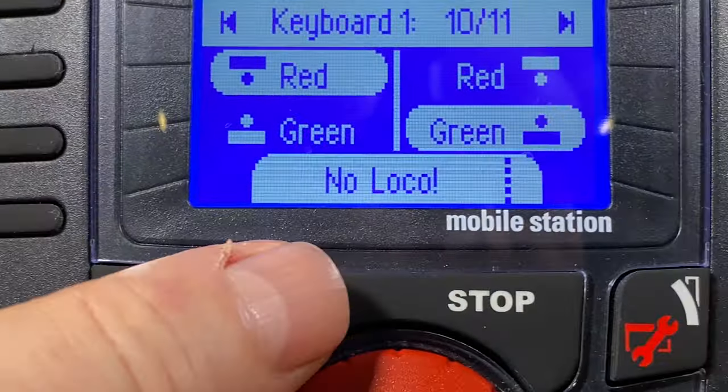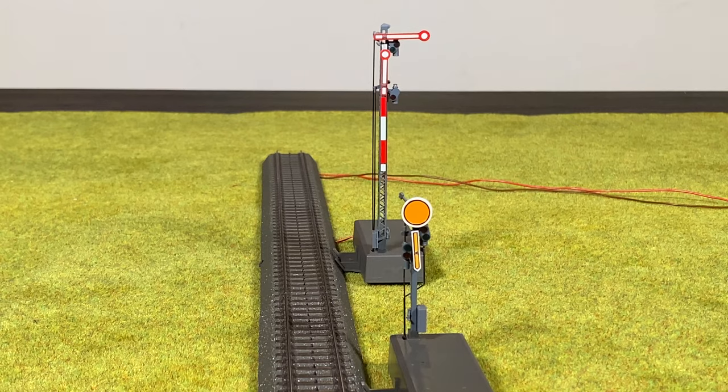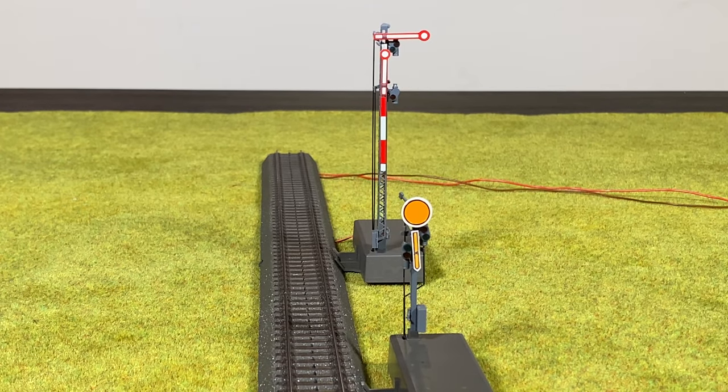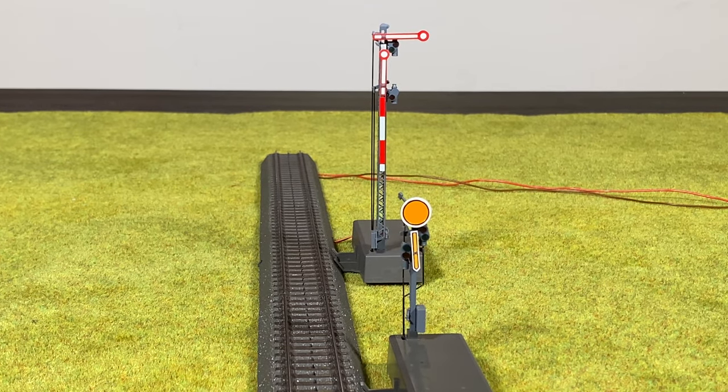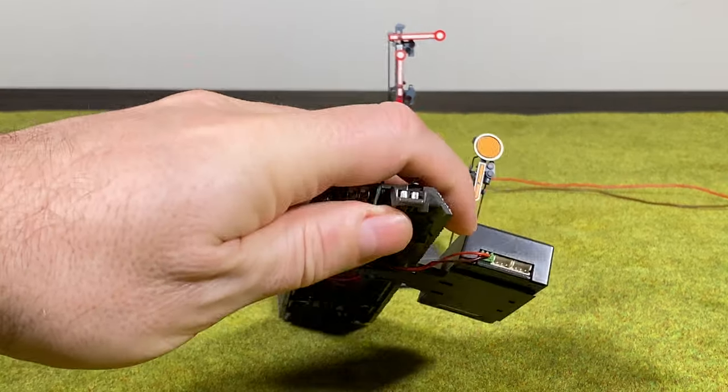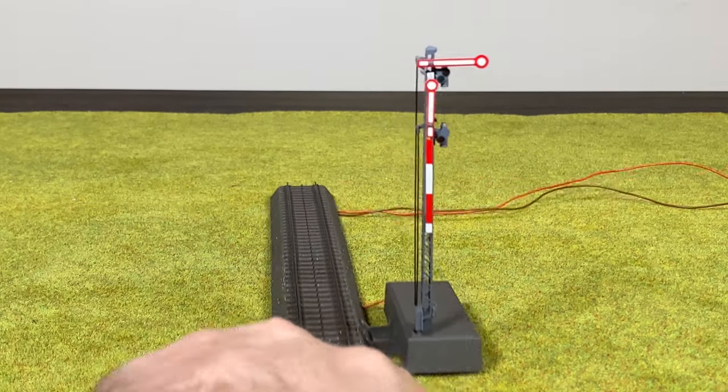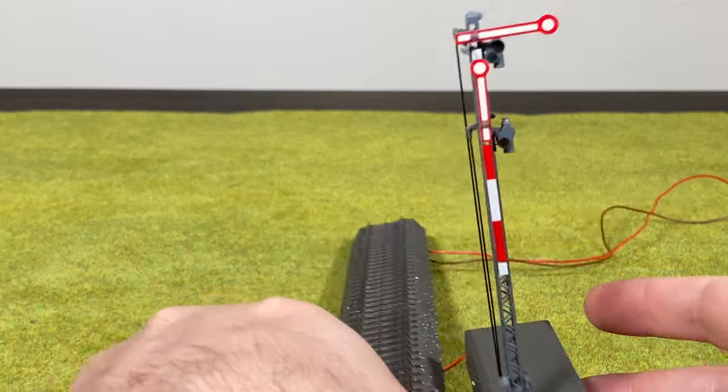First of all remember go into stop mode so there's no power to the signals. Do remember when you program you should only have one signal on the track. I'm gonna disconnect the distant signal here. I'm gonna take a look at the home signal.